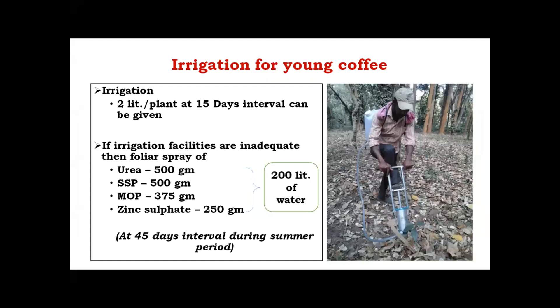The next topic is irrigation for young coffee. Once planting is done in August and September, by virtue of soil moisture it will take around two to three months. After the initiation of summer season, seedlings under field conditions face scarcity of water and desiccation. Therefore, we must ensure seedlings are provided with sufficient water — at least two liters of water per plant at 15-day intervals — to increase the survivability rate of the coffee plantations.